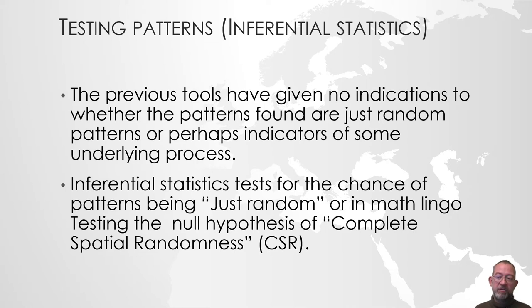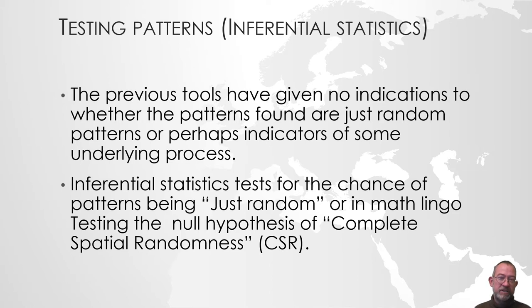Whatever pattern you're looking at — be it point patterns — so the firms are randomly distributed throughout the area of Copenhagen, and that will be your null hypothesis. What you're going to test is: can we say that that's not the case? Can we, with some statistical certainty, say that the points are not randomly distributed throughout Copenhagen?